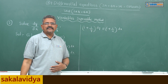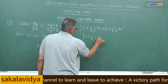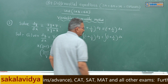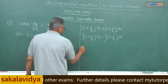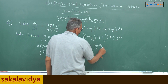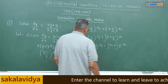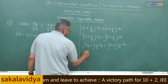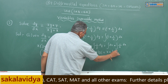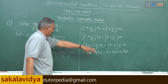Now integrate on both sides: integral of (1 + 1/y) dy equals integral of (1 + 1/x) dx. Applying simple integration: integral dy plus integral 1/y dy equals integral dx plus integral 1/x dx. This gives y plus log|y| equals x plus log|x| plus constant C.